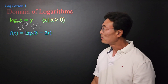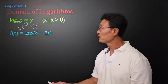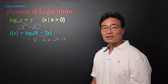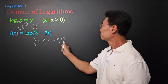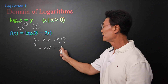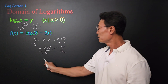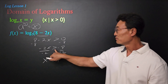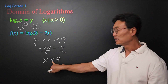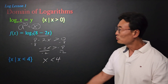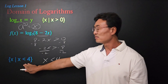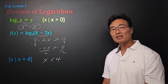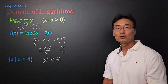Here's an example. If we're given f(x) equals log base 5 of (8 minus 2x) and we want to find the domain, we take the argument 8 minus 2x and set it greater than zero. Subtracting 8 gives us negative 2x greater than negative 8. Dividing by negative 2 — and switching the inequality sign — we get x is less than 4. So the domain is x less than 4.